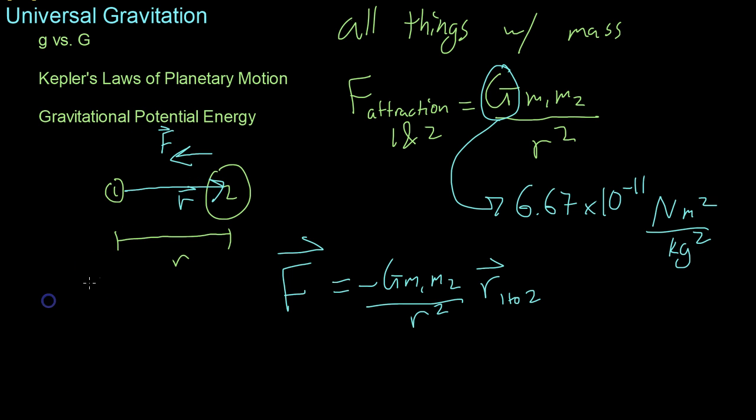Now most objects that exert a noticeable gravitational force are spherical. So for example, planets, comets, suns, black holes, they all have a sort of spherical mass distribution due to the fact that it's the most efficient surface area to volume ratio.